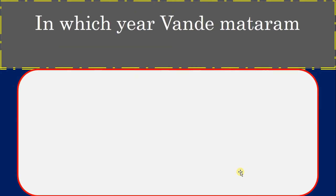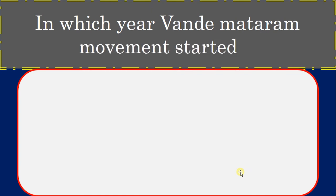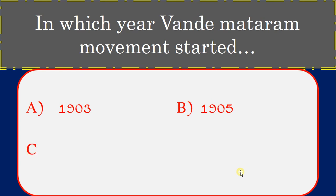In which year did the Vande Mataram movement start? Options: 1903, 1905, 1906, 1915. Correct answer: 1905.